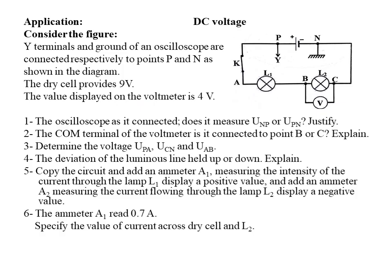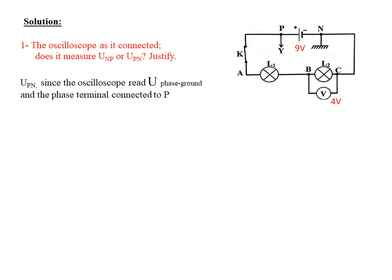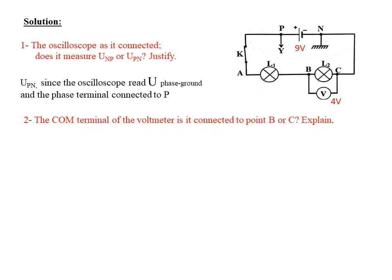Now for an application about DC voltage: as the oscilloscope is connected, does it measure U_np or U_pn? In this case it measures U_pn, since the oscilloscope measures U from phase to ground and the phase channel is connected to point P. Is the COM terminal of the voltmeter connected to point B or C? Explain.